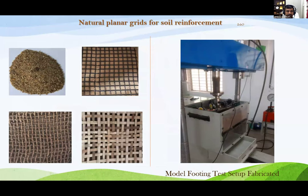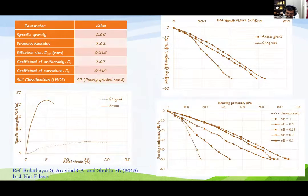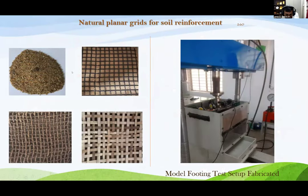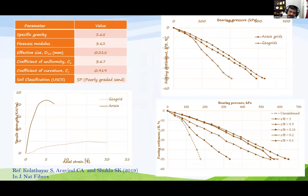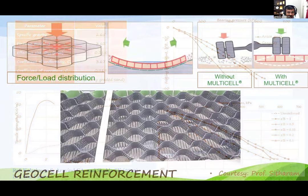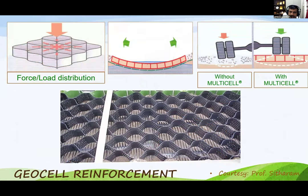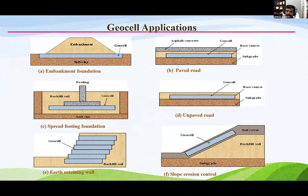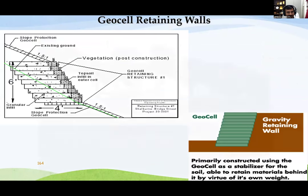Here is a study from my lab where we have used areca leaf sheath to make geogrids and geocells. Experimental test results show that areca leaf grids are performing as good as commercially available geogrids in the form of planar grids. The three-dimensional cellular confinement system — geocell — is becoming popular due to a lot of advantages. It has applications in embankment foundation, roads, earth retaining walls, erosion control, and can also be used for constructing retaining walls. This is a picture taken from Bangalore airport where geocells were used to protect a lake, though some infilled material has been washed away.